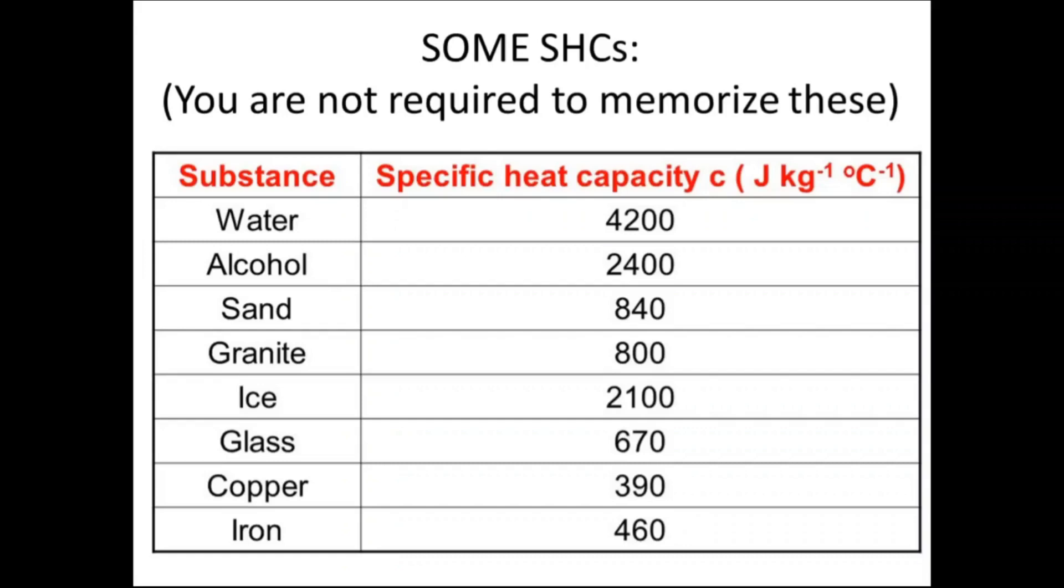Alcohol has about 2400, ice about 2100, sand and granite around 840 and 800 each, glass 670, copper 390, and iron 460.